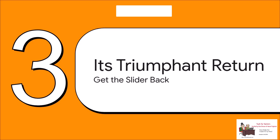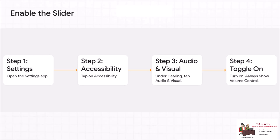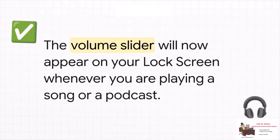So let's talk about how to get that slider back where it belongs. Getting it back is super simple, but here's the catch — you have to turn it on yourself; it's not on by default. Here's what you do: open up your Settings app, tap on Accessibility, then look for Audio and Visual, and right in there you'll see a toggle for Always Show Volume Control. Just flip that on. That's it — four little taps, and you're all set. The very next time you're playing music or a podcast, you'll see that familiar, super useful volume slider right there on your lock screen. Mystery solved.